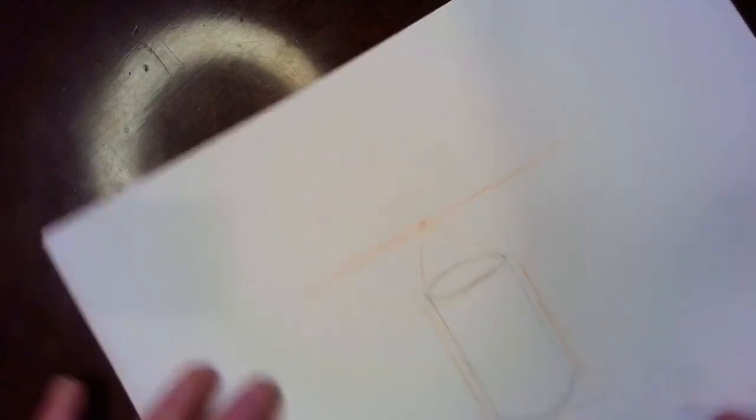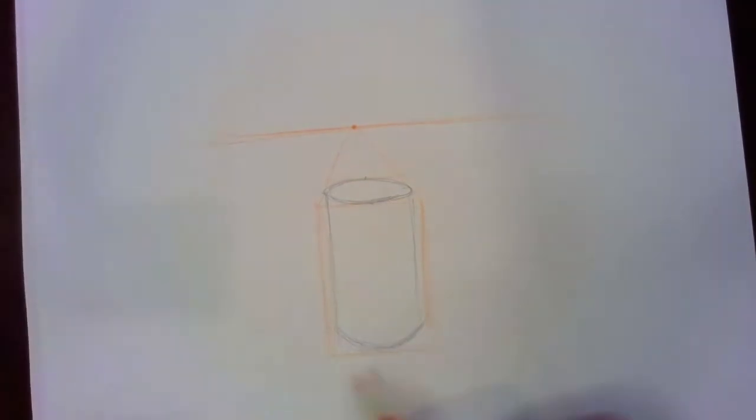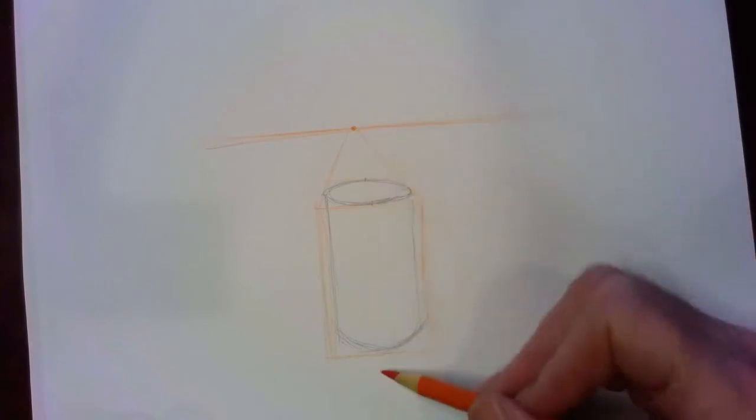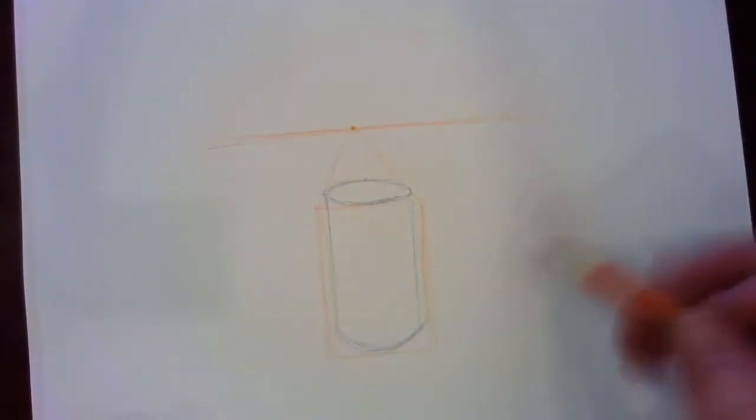One of the things to recognize is that the bottom oval is even larger than the top because it's further away from your horizon line.